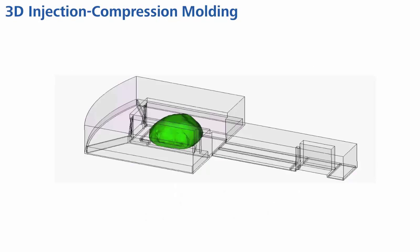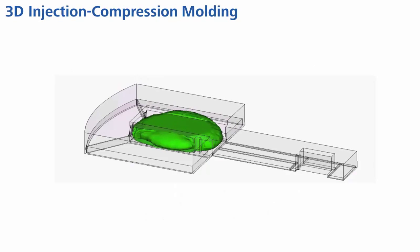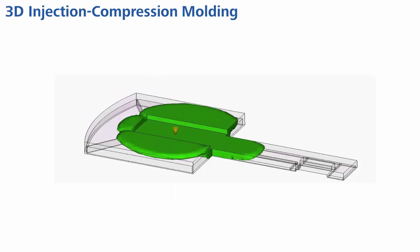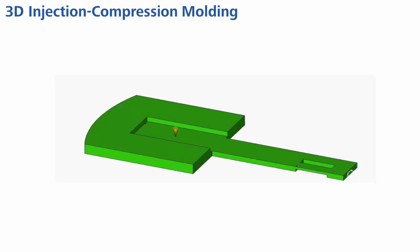Let's have a look at some examples. The injection compression technique is typically used for thermoplastic materials. Plastic is injected into a slightly open mold, and the mold closing will form the part.